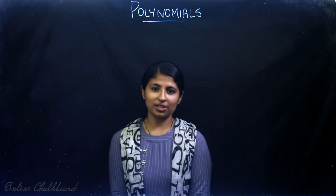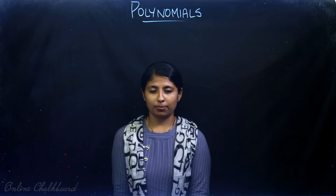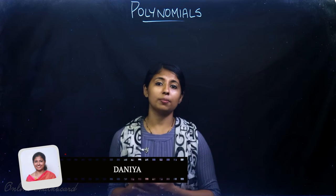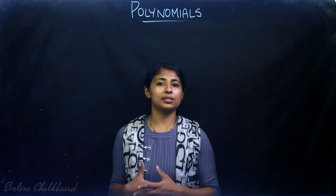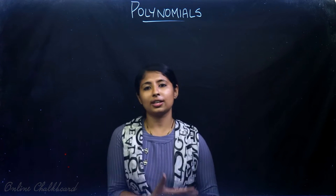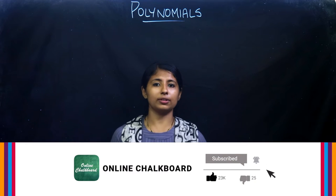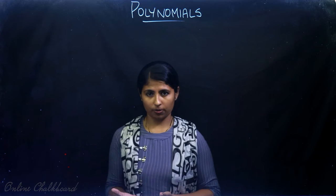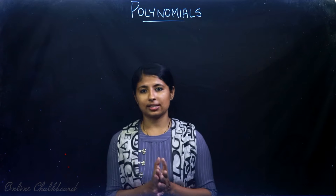Hello friends, welcome back to Online Chartboard. We are discussing here Class 10 Chapter 2 Polynomials. In the previous classes we discussed zeros of a polynomial, how it can be represented geometrically, and the relation between the number of zeros using graphs. We also learned the relation between coefficients of a polynomial and its zeros. Today we will be discussing Exercise 2.2 questions.